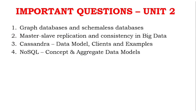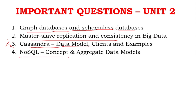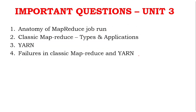For Unit 2, confirmed 4-mark questions include graph databases, schemeless databases, and master-slave replication. The Cassandra data model is a very very important question. SQL concepts and aggregate data models are confirmed for Unit 2 as well. Unit 3 confirmed important topics include MapReduce components and the map-reduce master concept with examples.